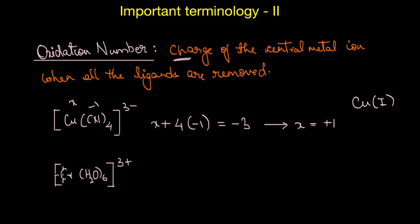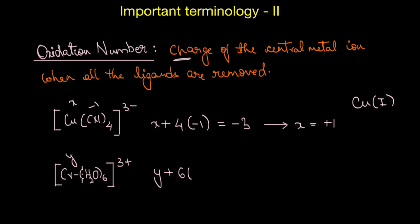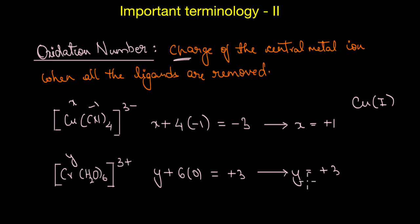Similarly, for chromium in this complex, let y be the oxidation state of chromium. Then y + 6(0) = +3, since water is a neutral molecule and the overall charge of the complex is +3. So y = +3, and the oxidation state is written as Cr(III).